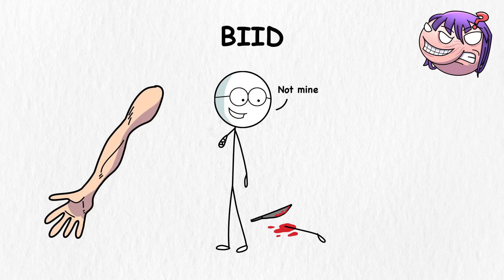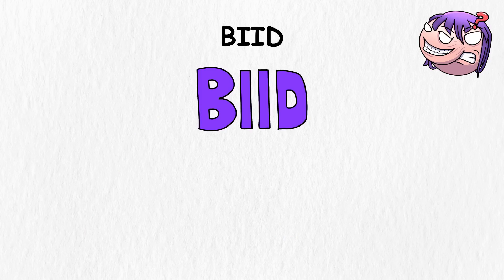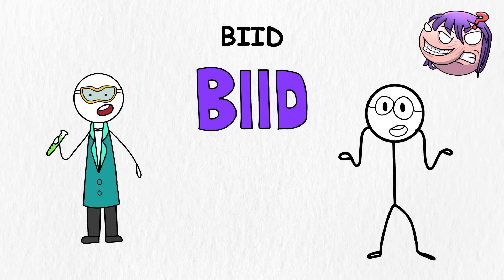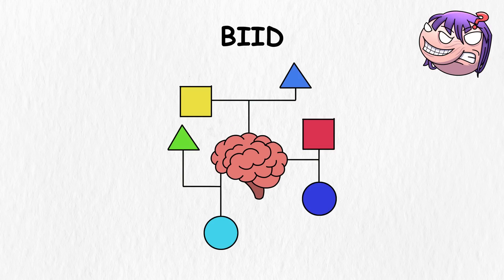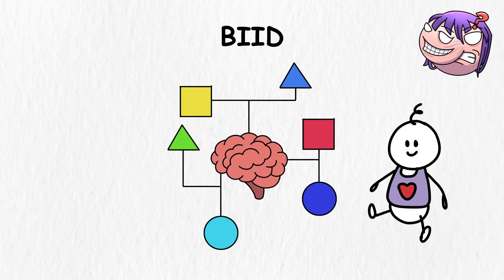When you remove the imposter limb, you'll feel alright again, even though you're just all left. The cause of BIID isn't fully understood, but some researchers believe that the brain isn't mapping the body correctly, especially during childhood. This makes their brains believe that some of their limbs shouldn't be there.